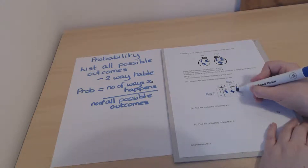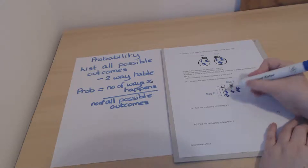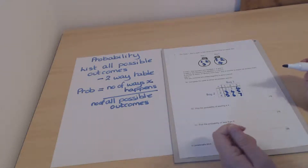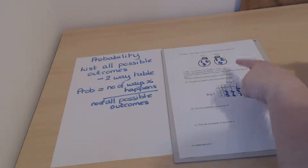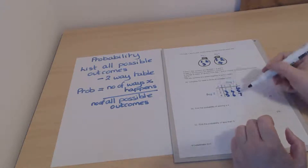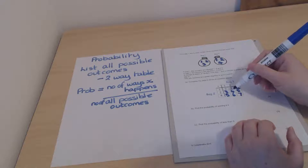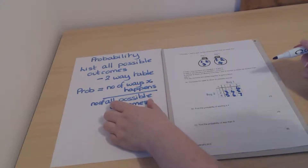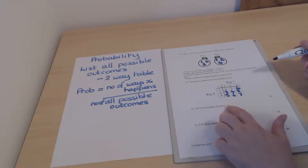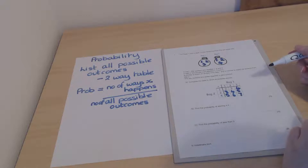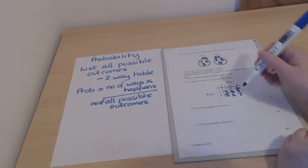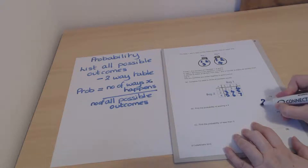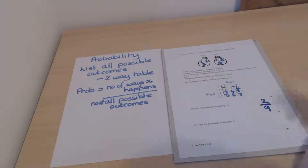Three and two is 5, one and four is 5, two and four is 6, three and four is 7. So those are all the possible combinations. Looking in the table we've got nine total outcomes, so 9 is the denominator of our probability fraction. They ask for the probability of scoring 4. Looking at the table, 4 appears two times, so the probability of scoring 4 is 2 out of 9.